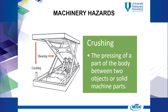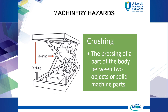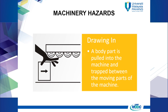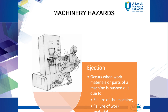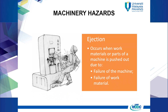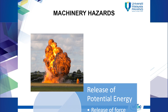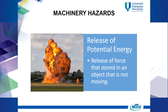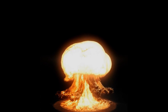Crushing hazard is the pressing of a part of the body between two objects or solid machine parts, like a stamping machine or power press. Drawing hazard occurs when a body part is pulled into the machine and trapped between the moving parts. Ejection hazard occurs when work materials or parts of a machine are pushed out due to failure of the machine or failure of work material. Release of potential energy is the release of force stored in an object that is not moving.